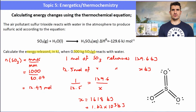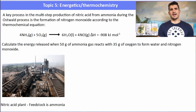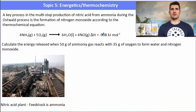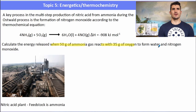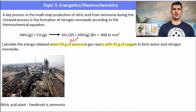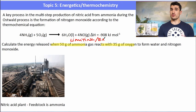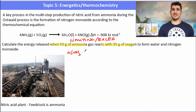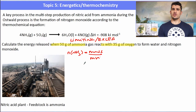Another example — a step in the Oswald process: 4 moles of ammonia plus 5 moles of oxygen form 6 moles of water and 4 moles of nitrogen monoxide. Calculate the energy released when 50 grams of ammonia reacts with 35 grams of oxygen. Because we have masses of both reactants, this is a limiting/excess question, so I first need to work out which reactant is limiting.